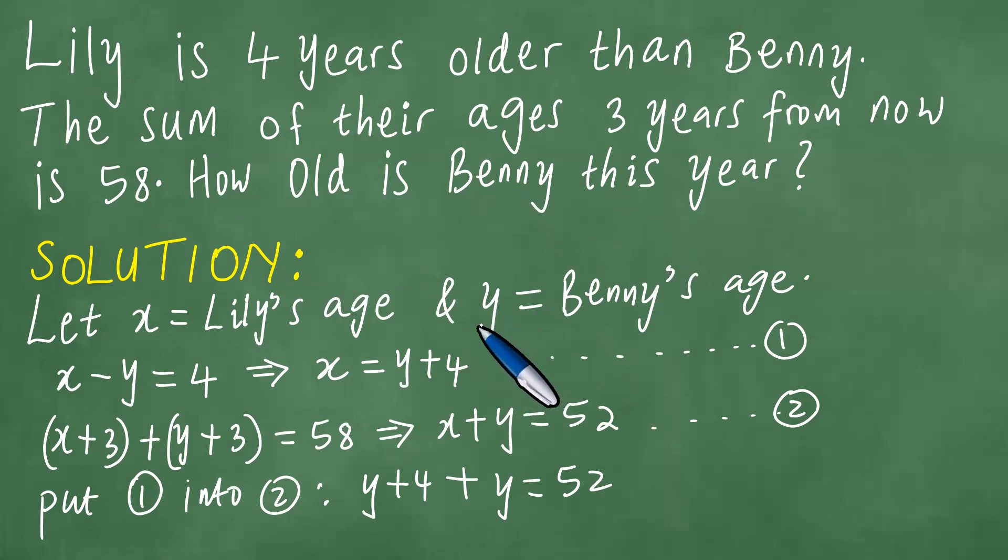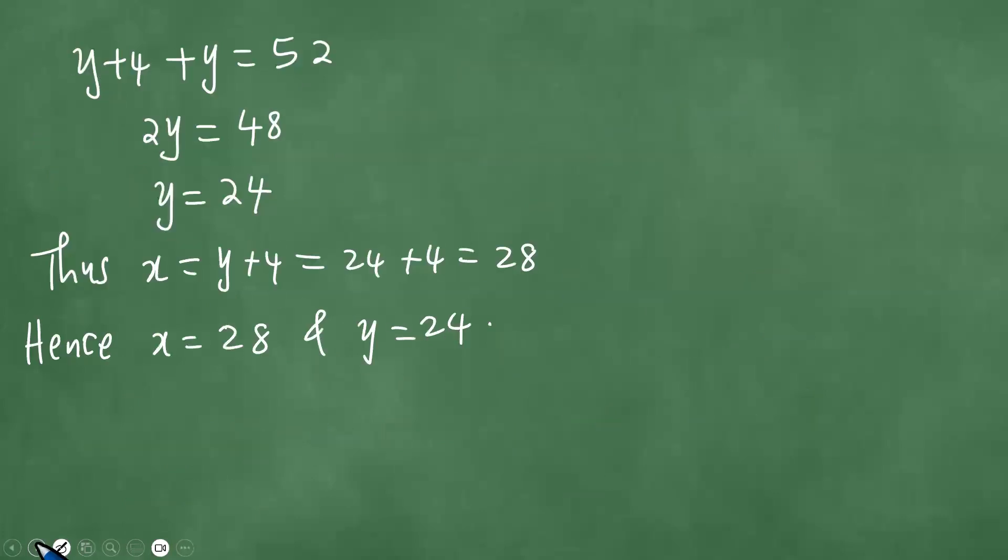Right. How old is Benny this year? So we understand that y is Benny's age. Meaning therefore y is Benny's age. And therefore Bernie is 24 years old.